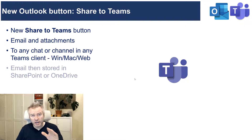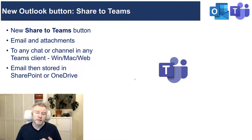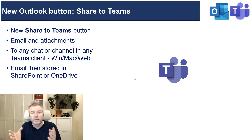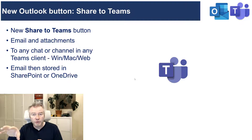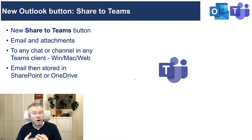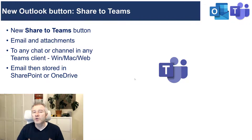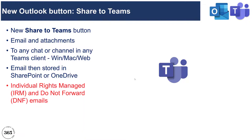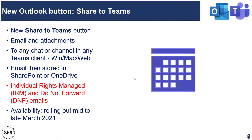In Outlook you'll have one button to push an email into a channel or a chat. If you push it to a channel, it needs to be stored where the team can access it, so it goes into the SharePoint site behind that team and belongs to the channel and group rather than you as the sender. If you push it into a chat, like files in a Teams chat, it goes into your OneDrive and remains yours. You can look forward to this from mid to late March.